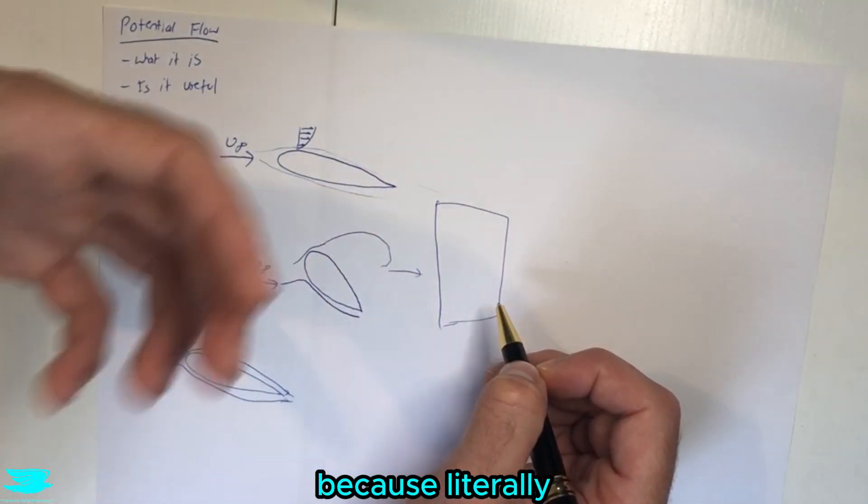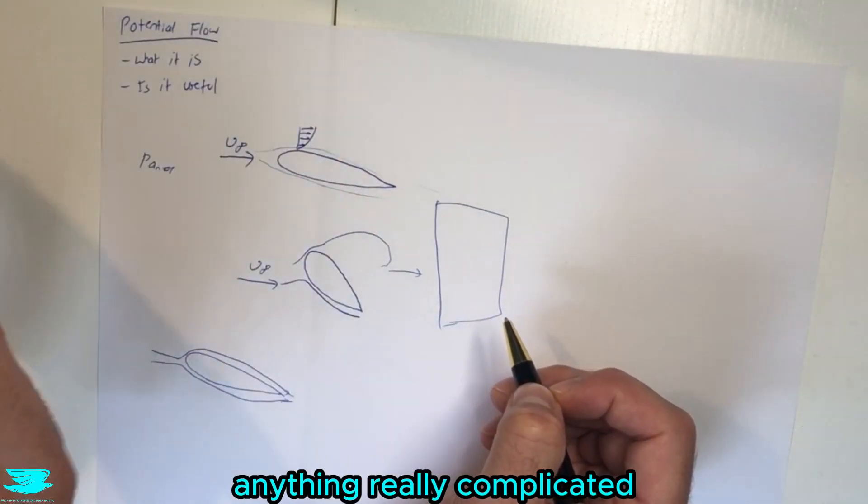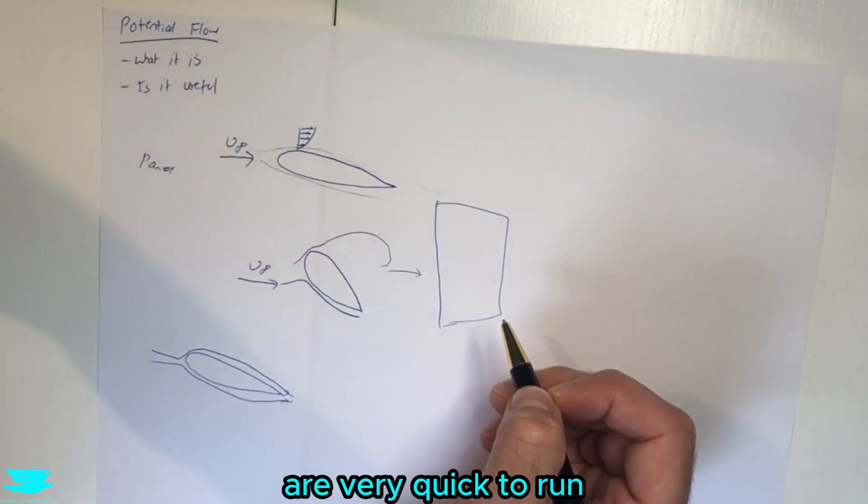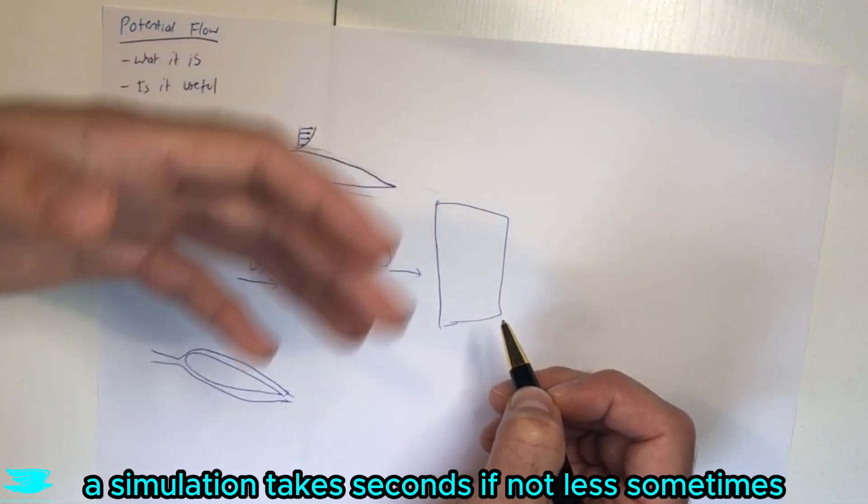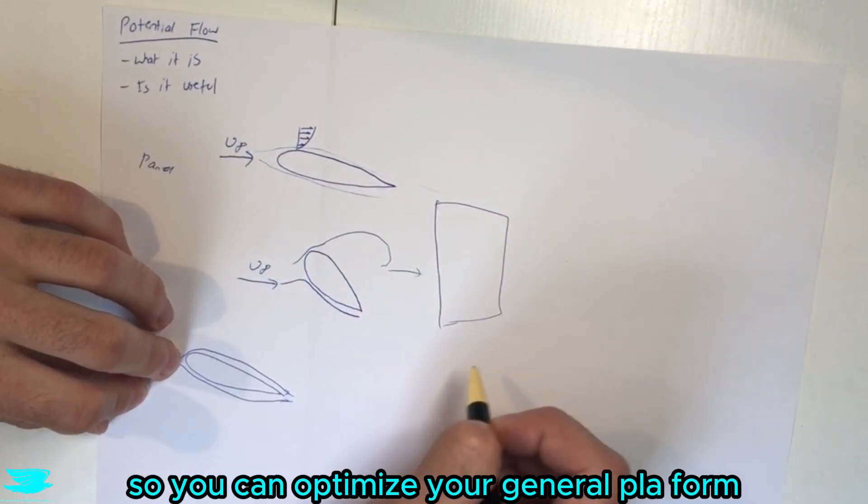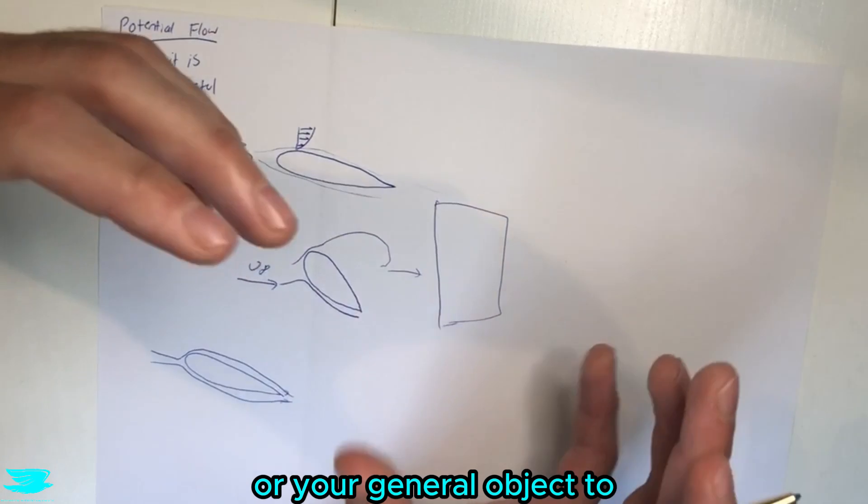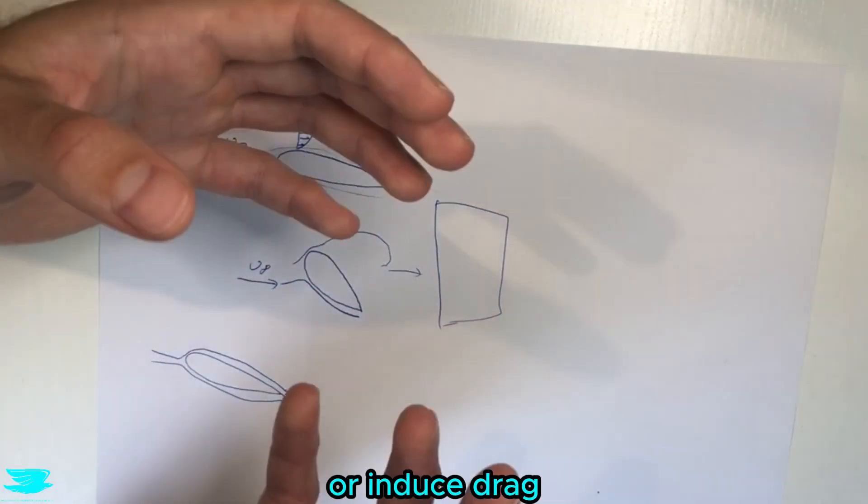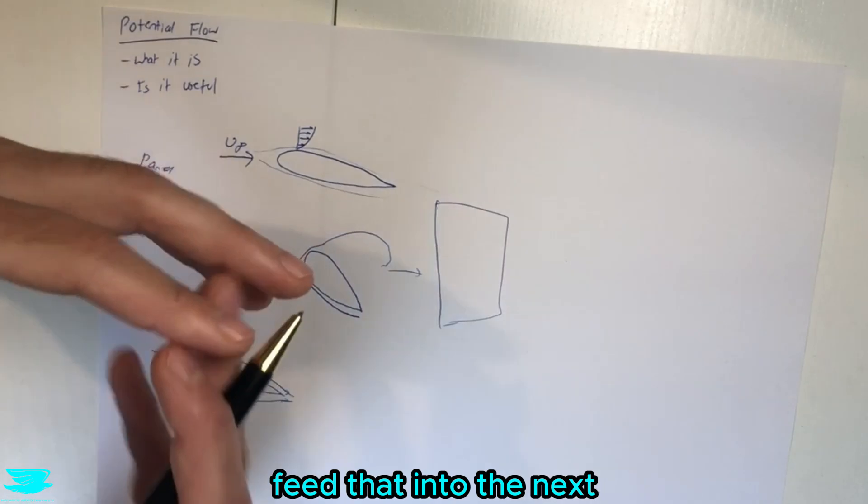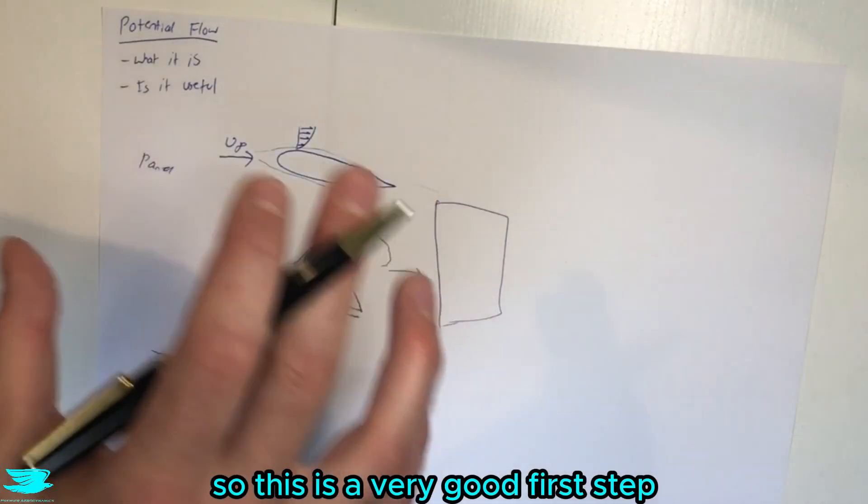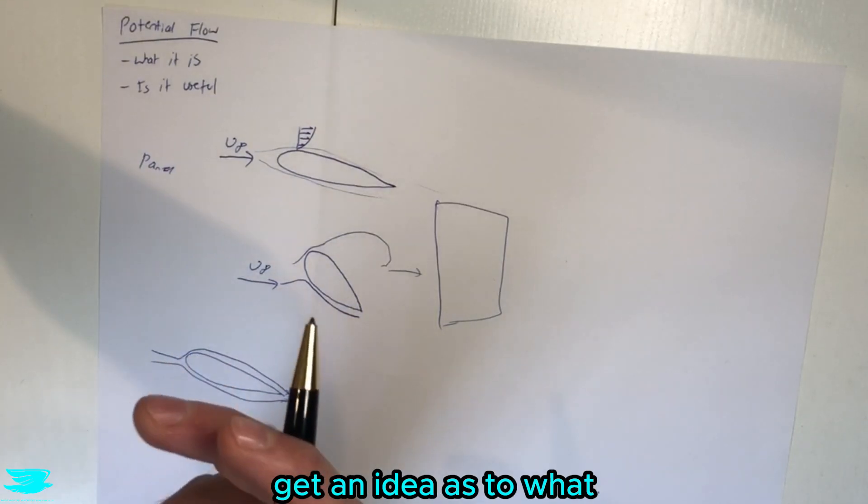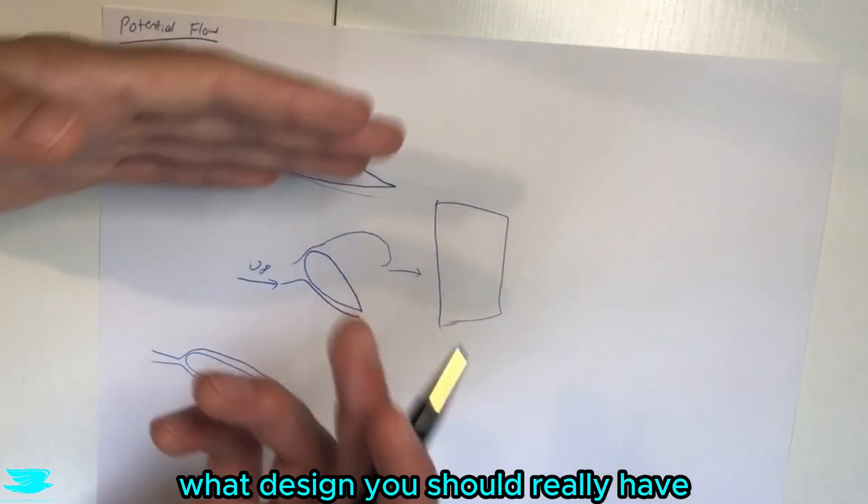And that is a very powerful tool because literally without having to do anything really complicated - because potential flow solvers like panel methods are very quick to run, a simulation takes seconds if not less sometimes - so you can optimize your general planform or your general object to maximize or minimize lift or induced drag, whatever you are looking at, very quickly and then feed that into the next step in your design process. So this is a very good first step, first approximation, to get an idea as to what design you should really have.